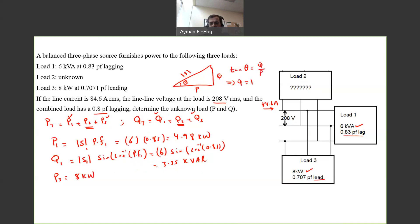You can say that Q equals P times tan theta, and theta equals cosine inverse of the power factor. From this, you can say that Q3 equals P3 times tan of cosine inverse of 0.707, and this will give me 8 kVAR.